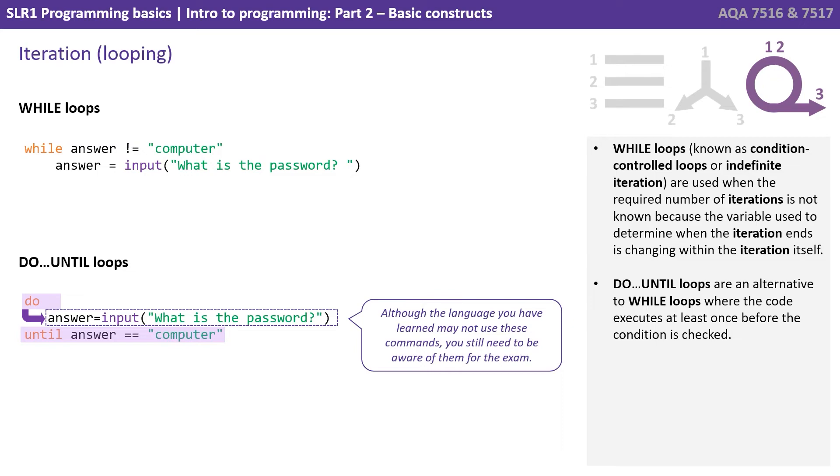With a do-until loop, do the following line of code until answer equals computer. The condition being checked at the end guarantees the line of code will be run at least once as a minimum. Although the language you have learned may not use these commands, you still need to be aware of loops that check conditions both at the start and also at the end of the iteration.